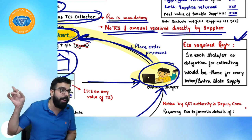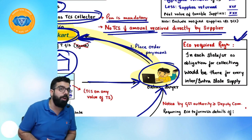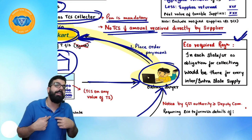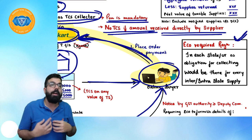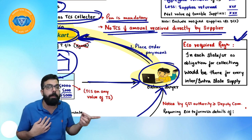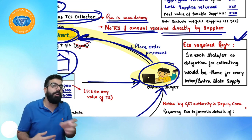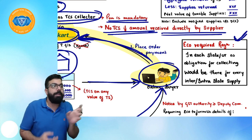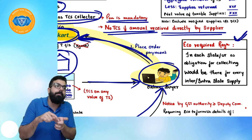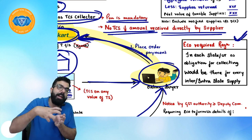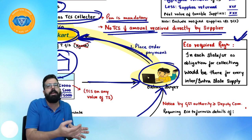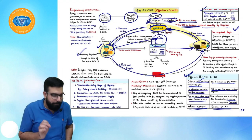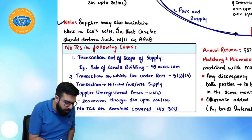The e-commerce operator must take registration in all states as per Rule 12. A TDS deductor also must take registration in all states. When filing your return (e.g., GSTR-7), in Part A you can mention the state where you want registration, and in Part B just mention the head office address.